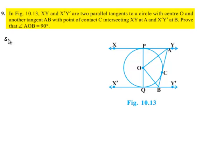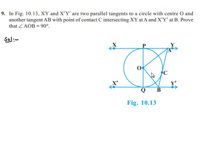Moving on to solution. Here, XY is parallel to X'Y'; in between, a circle is present with center O. A tangent is drawn through point C intersecting XY at A and X'Y' at B. We are asked to prove that angle AOB equals 90 degrees. In order to prove this, let us initially join OC.